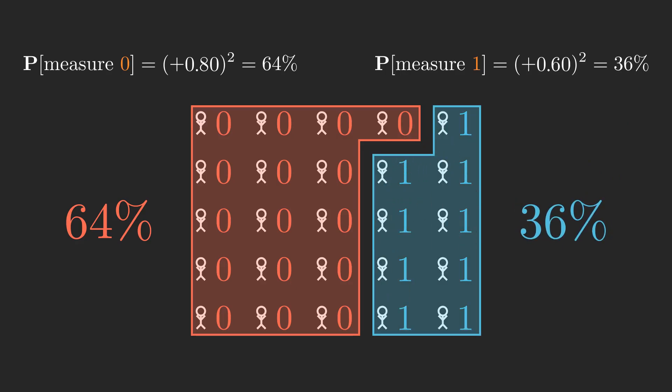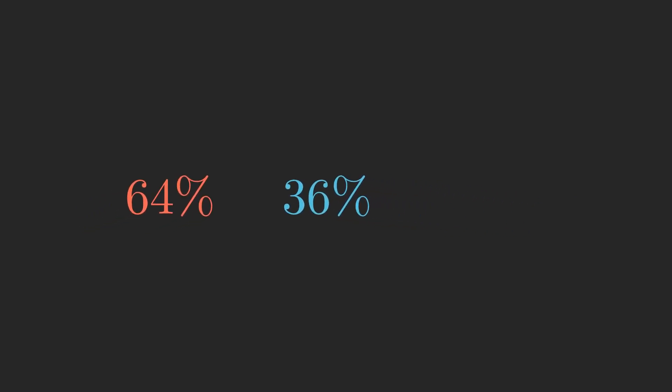A rule about amplitudes that should seem natural given this phenomenon is that the sum of the squares of the amplitudes must always equal 1, thereby ensuring a valid probability distribution for measurement.